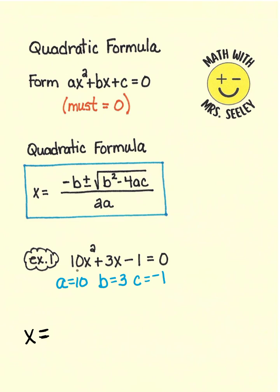Let's put it into practice. In this example, a is equal to 10, b is equal to 3, and c is equal to negative 1. The quadratic formula then says negative b plus